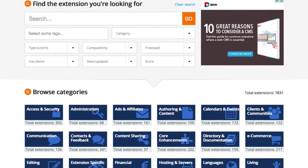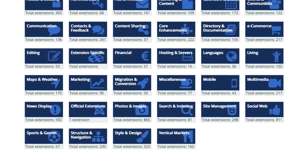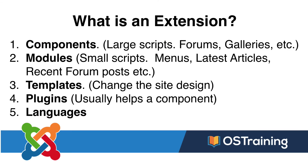There are five different kinds of extensions in Joomla, and they come in many categories as you can see on the screen. The five kinds are: components, which are large scripts like forums and galleries; and modules, which are smaller scripts that display menus, latest articles, recent forum posts. Modules take a small script and put it on your site either in a sidebar, which is called a module position, or even in your content.